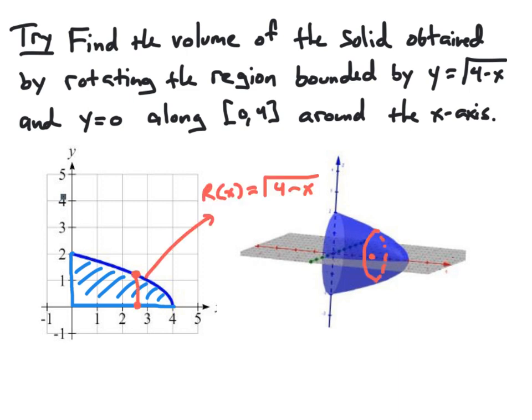Since the region borders the x-axis, which is our axis of rotation, we're going to have cross-sections that are disks. We need to figure out the radius of the disk found at each value x from 0 to 4. By looking at our region, we see that the cross-sectional disk is formed by a segment from the x-axis up to the curve y equals square root of 4 minus x. Therefore, the radius of our particular disk at x will be the square root of 4 minus x.